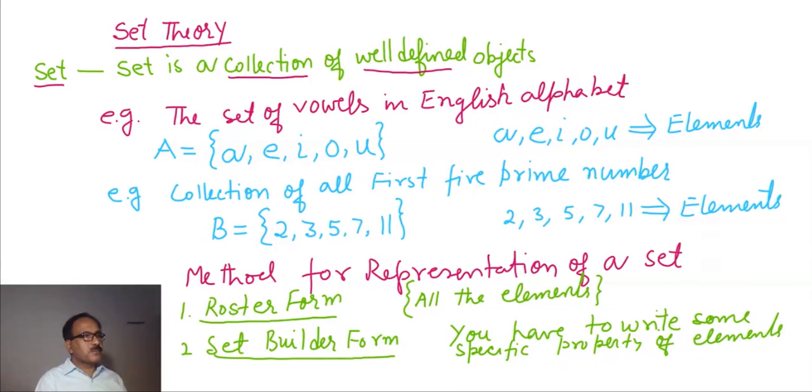See previous example, the set of vowels in English alphabet. We will write in roster form this way: you have to write all the vowels A, E, I, O, U. But whenever we are going to represent this set in set builder form, then there will be a system.